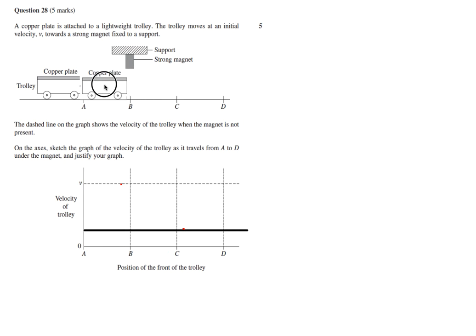But what about in between? As it goes in and starts to slow down, because it slows down, the change in flux is not constant. So it's not a straight line across here.